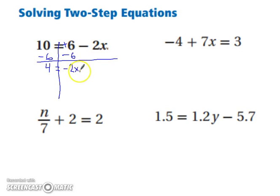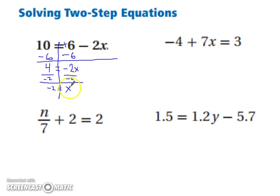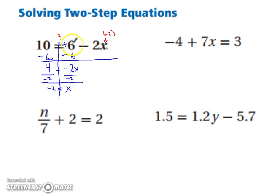The opposite of negative two times x is to divide by negative two. So we're going to divide by negative two on both sides of the equation. Four divided by negative two is negative two, and now x is by itself. Time to double check: substitute negative two back in for x. Is ten equal to six minus two times negative two? Negative two times negative two is positive four. Six plus four is ten. So yes, we're good to go.